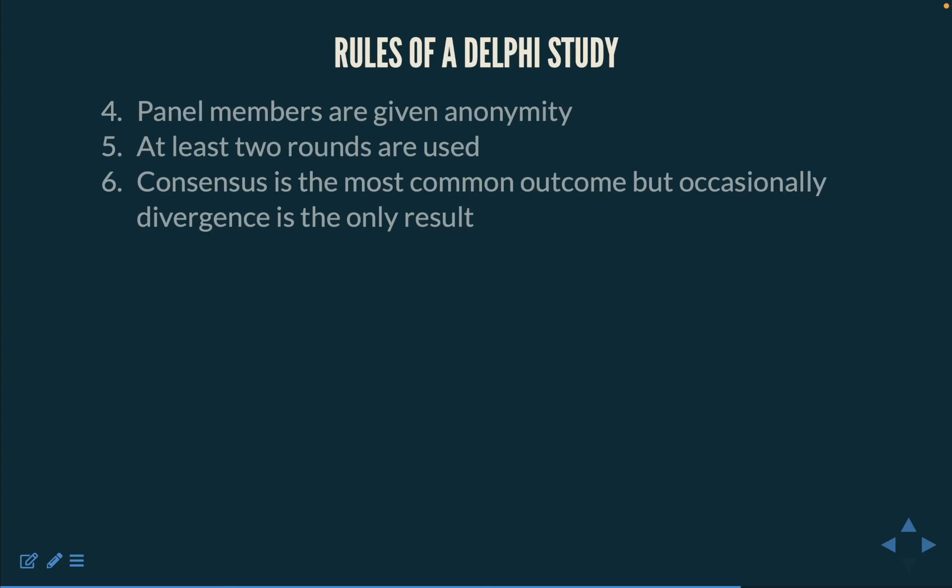Consensus is the most common outcome, but occasionally there is a divergence result. A Delphi study seeks to achieve consensus, but this is not always possible. Where ideas continue to run at odds with each other, this must be reported as part of the research findings. It is rare that an entire study would culminate in complete divergence, but not unlikely that there is an element of divergence in the findings.